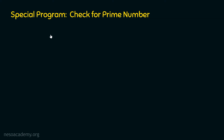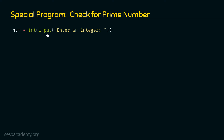First, we need to ask the user to enter an integer. For this purpose, we need to use the input method: num = int(input("Enter an integer")). With the help of the input method, we will ask the user to enter an integer. We will receive the string representation of the integer from the input method, which will be provided to the int method to convert it to an integer. The num variable will then point to that integer.